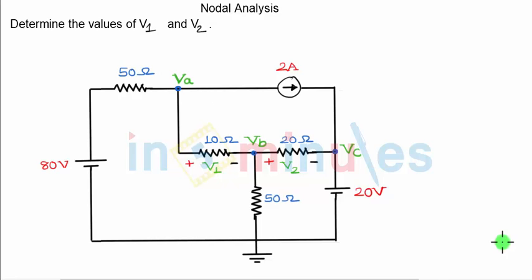It is going to be a little different compared to the previous problems. The question is to find voltages V1 and V2. V1 is the voltage across 10 ohm resistance, V2 is the voltage across 20 ohm resistance. And as you can see, because they are voltages across resistors, they are not the node voltages.